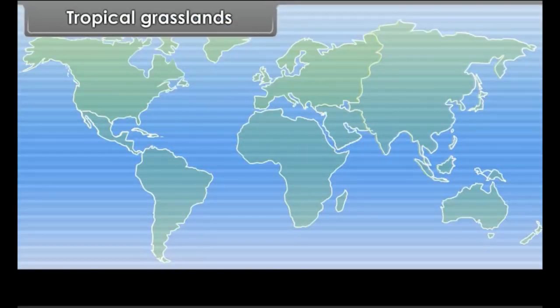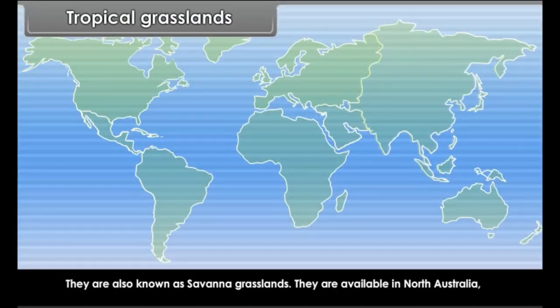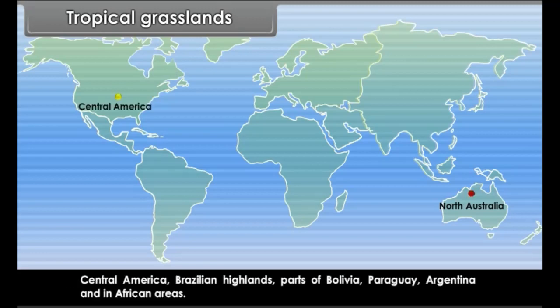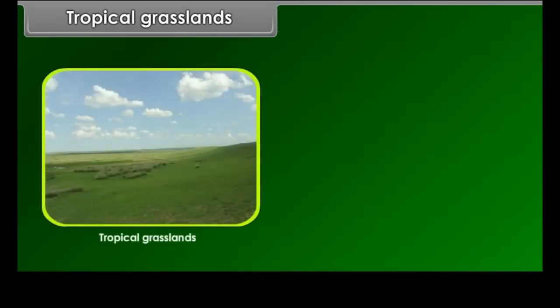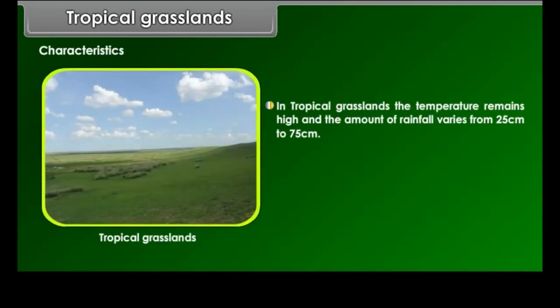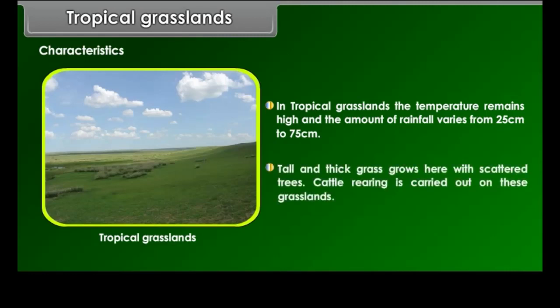Tropical grasslands, also known as Savannah grasslands, are found in North Australia, Central America, Brazilian Highlands, parts of Bolivia, Paraguay, Argentina and in African areas. In tropical grasslands, the temperature remains high and the amount of rainfall varies from 25 cm to 75 cm. Tall and thick grass grows here with scattered trees.